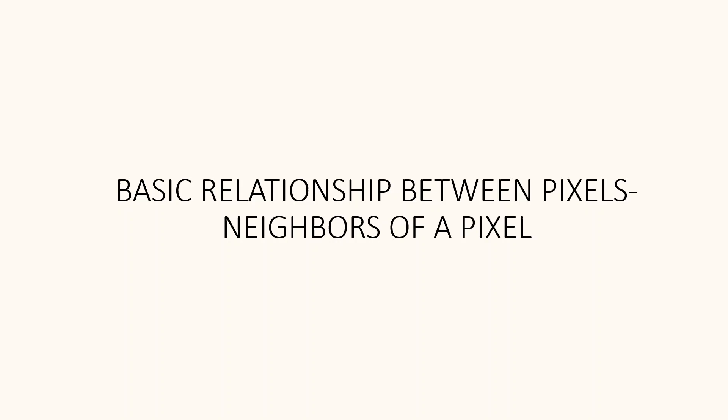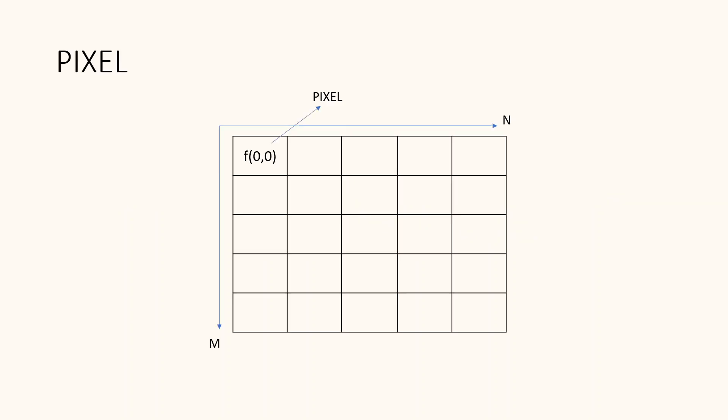In this session, we will discuss various important relationships between pixels in a digital image. We know that a digital image is composed of a finite number of elements, each of which has a particular location and value, which we call a pixel. Consider this figure representing an image plane with m rows and n columns, each having a location and a value, where the value is the intensity of the pixel. Let us note the location of the first pixel as f, and the value of this pixel is the intensity level at this point in an image.